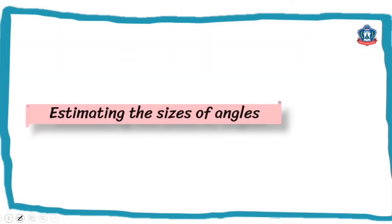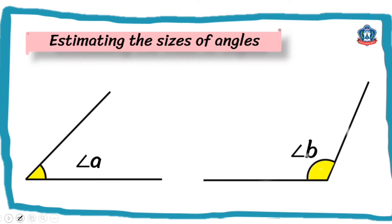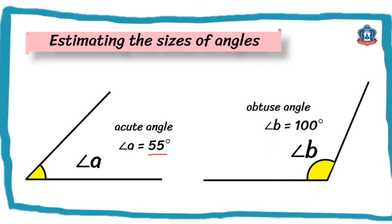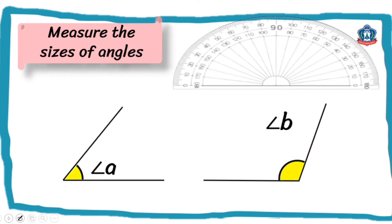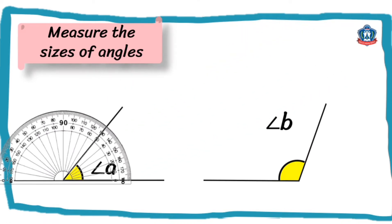Now let's estimate the sizes of angles. We know that an acute angle measures less than 90 degrees. So let's say angle A measures 55 degrees because it is smaller than 90 degrees. Angle B is an obtuse angle, so let's say it is 100 degrees since 100 degrees is bigger than 90 degrees. To find the correct sizes, we measure using our protractor. Make sure the baseline is on 0. Angle A measures 50 degrees. How about angle B? In this case we use the outer scale, starting from 0 at the baseline — this angle is 110 degrees.